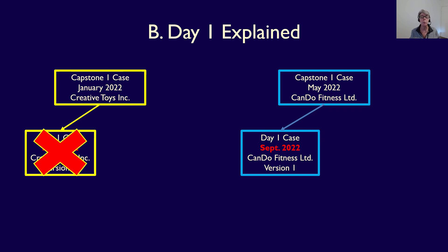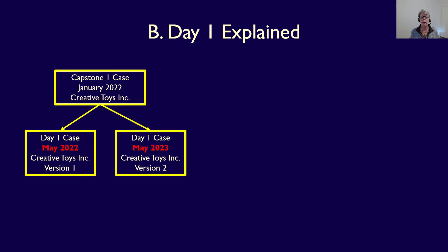Instead, there was a version one of the Can Do Fitness Limited case — a case you have never seen because your Capstone One module from January 2022 covered Creative Toys Inc. There are only two versions of each Capstone One module case, and if you take the January Capstone One module, you must write the May CFE for Day One. You can't write the September CFE for Day One because there will never be a roll forward of your January Capstone One case.